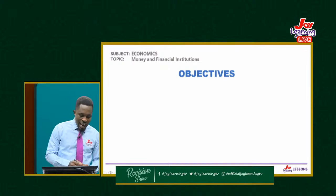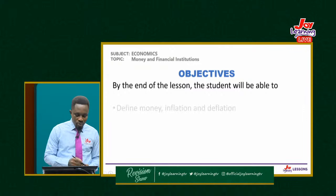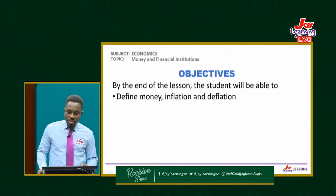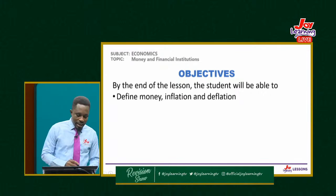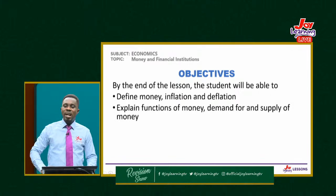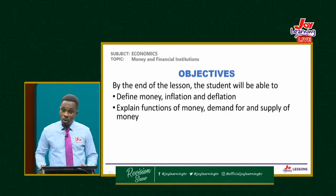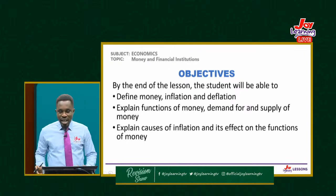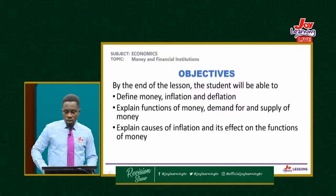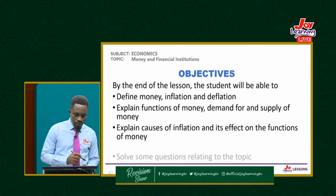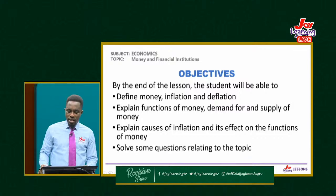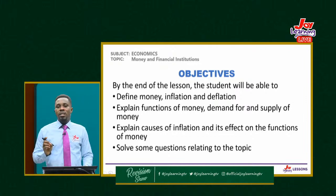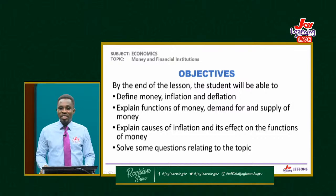For our objectives tonight, I would expect you the student to be able to define money, inflation, and deflation. You should be able to explain functions of money, demand for money, and supply of money. You should also be able to explain causes of inflation and its effect on the functions of money. By doing this we would also talk about financial institutions. Lastly, you'll solve some questions relating to the topic — money, inflation, and financial institutions.